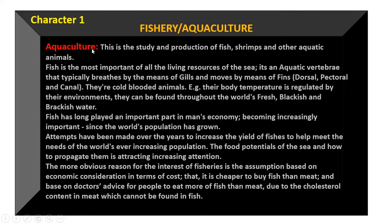Chapter one is fishery aquaculture. When we talk about aquaculture, what do we mean? Aquaculture is the study and production of fish, shrimps, and other aquatic animals. So when we talk of aquaculture, we are not talking only about fish. But in this course, we are training on fish alone — specifically the clarias species of catfish and tilapia.